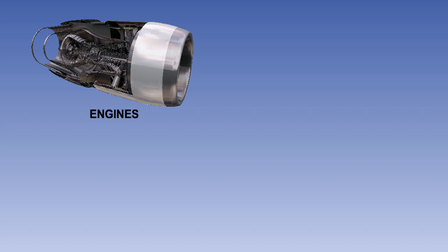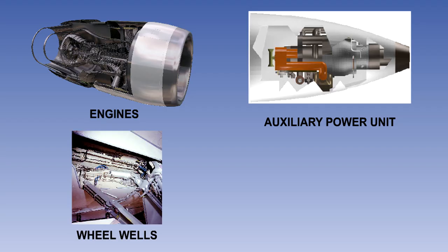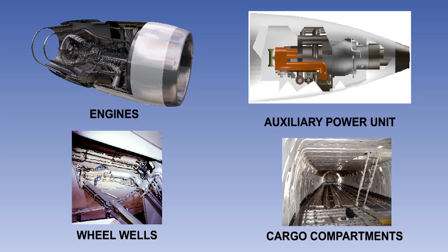The specific areas that require protection are the engines, the auxiliary power unit or APU, the wheel wells, and the cargo compartments. These areas are known as designated fire zones and they must have detection systems fitted to warn the crew of a fire.